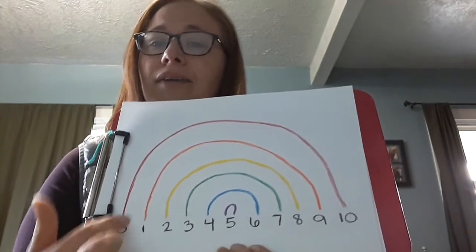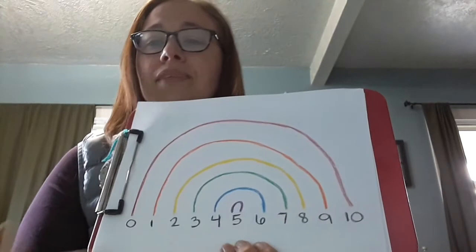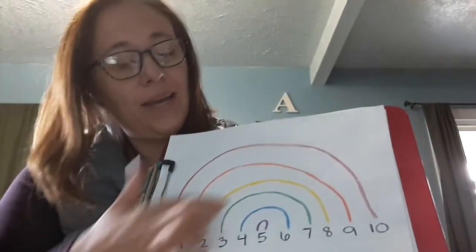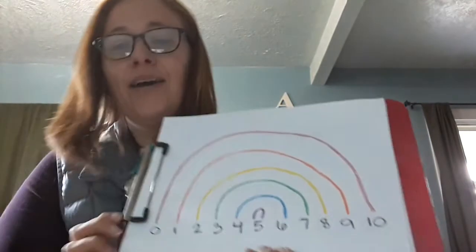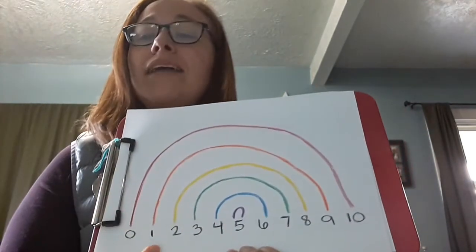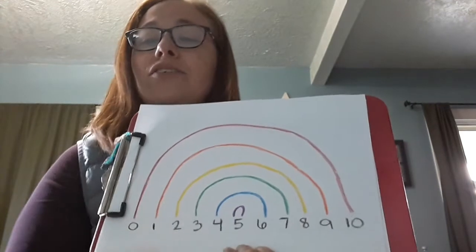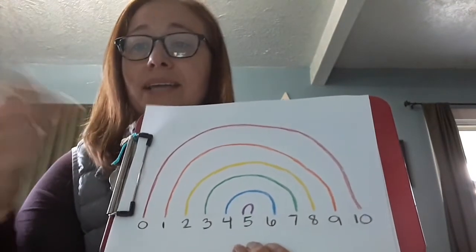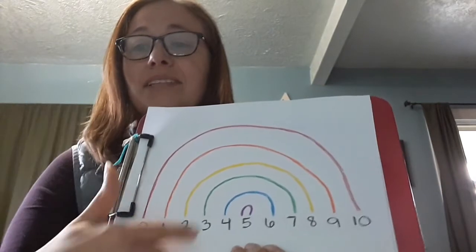So zero and ten make ten, one and nine make ten, two and eight make ten, you understand the pattern. So it's really important that students can do that with automaticity. I have eight. How many more do I need to make ten? Two. Okay, so that's just something you can practice.